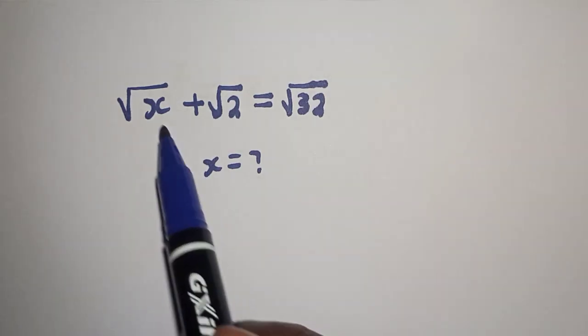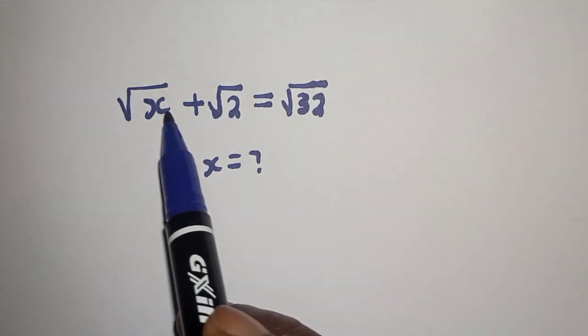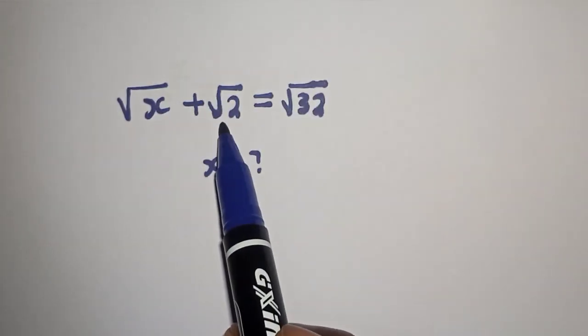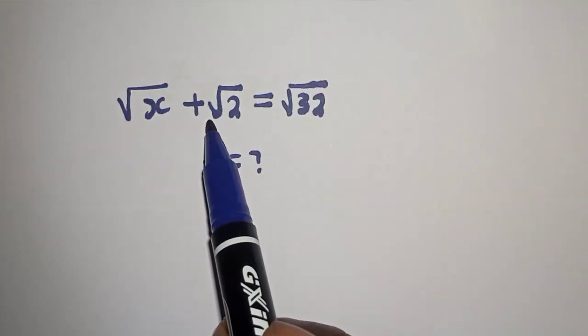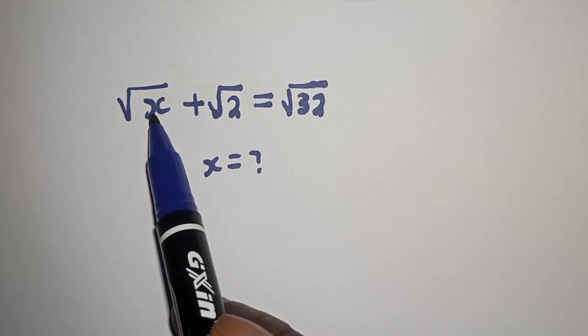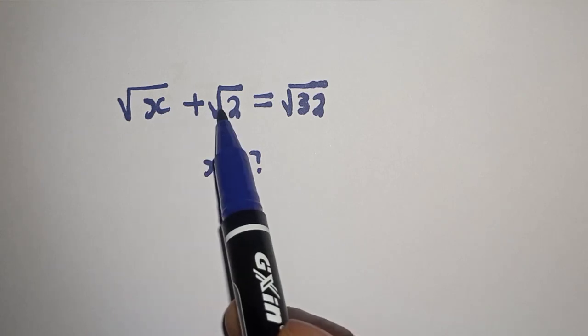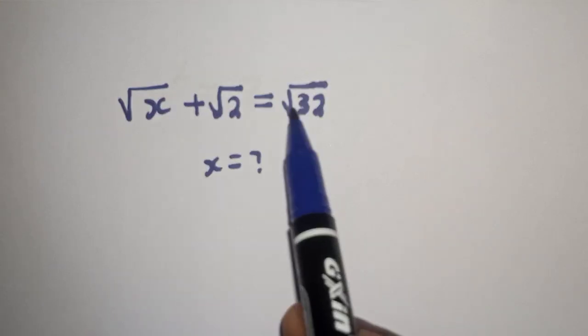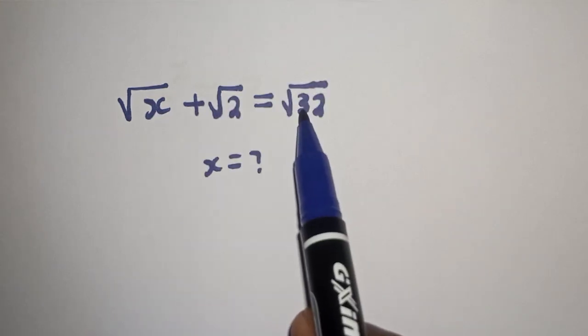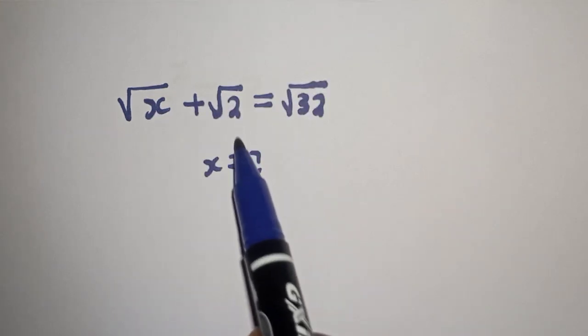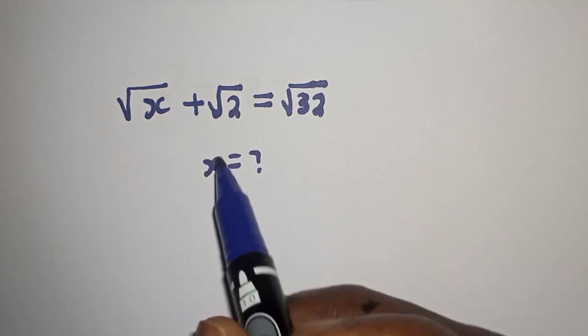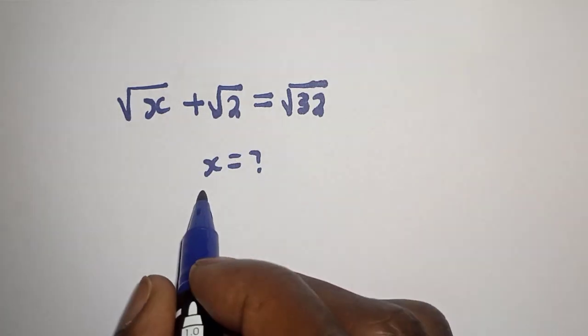Hello, welcome to Magis. In this class we want to find the value of s from this given equation: square root of s plus square root of 2 is equal to square root of 32.